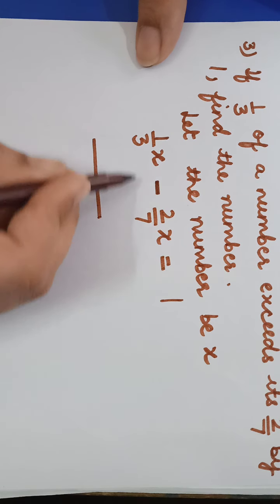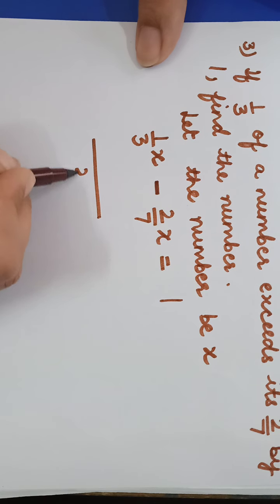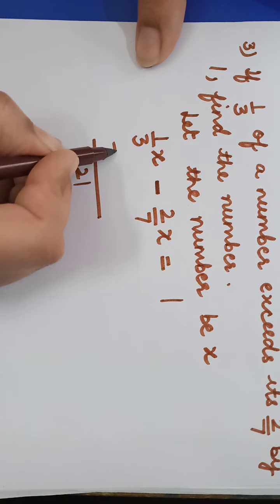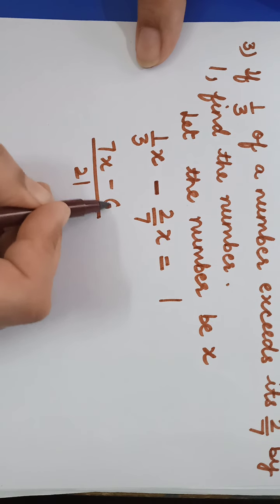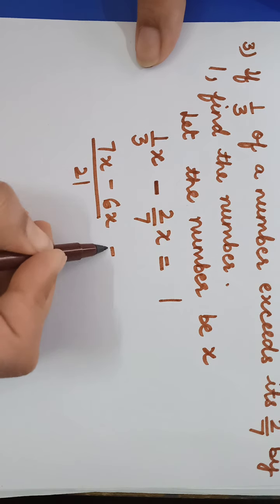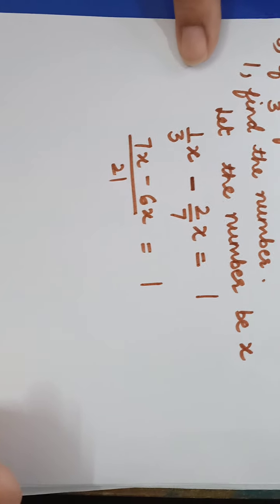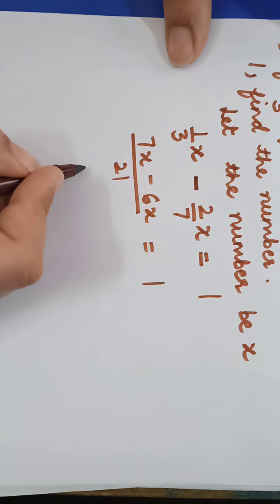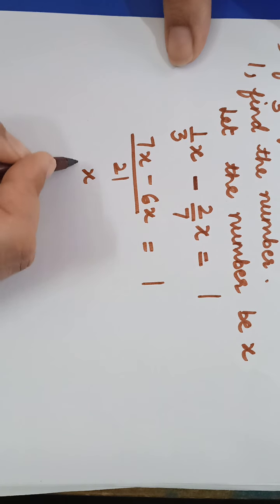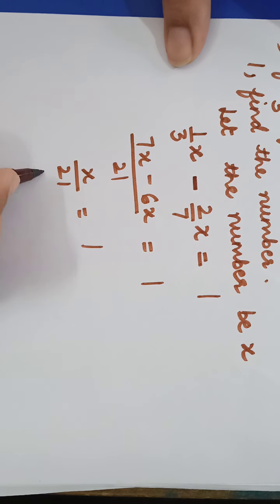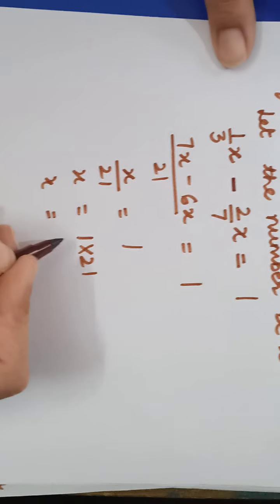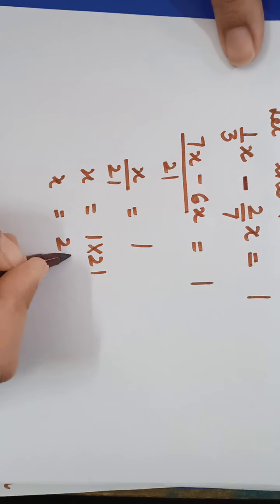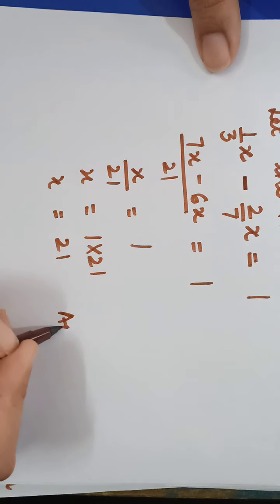Taking the LCM of 3 and 7, which is 21: (7x minus 6x) upon 21 equals 1, giving x upon 21 equals 1. Therefore x equals 21, which is the answer.